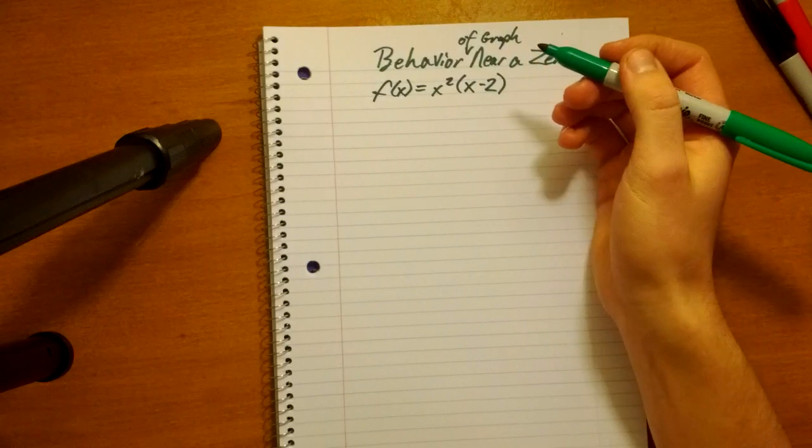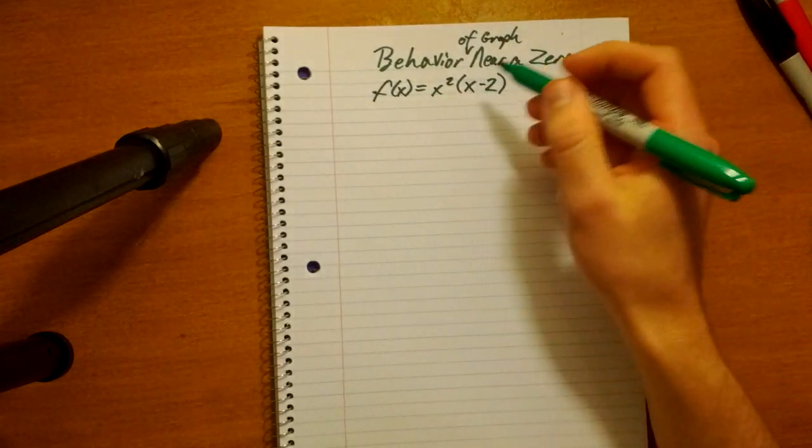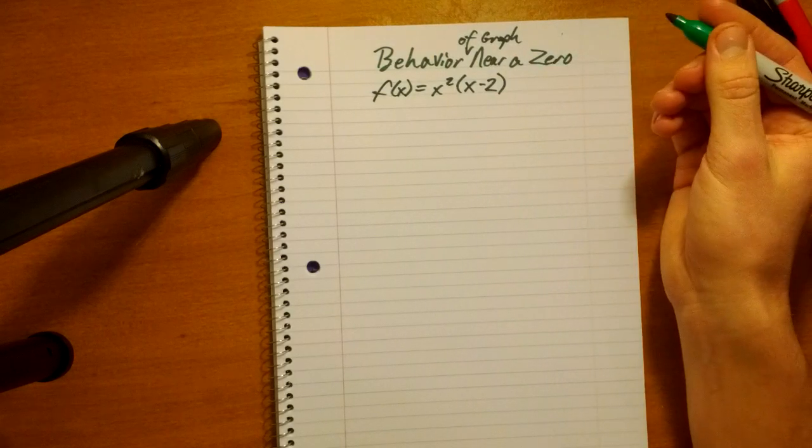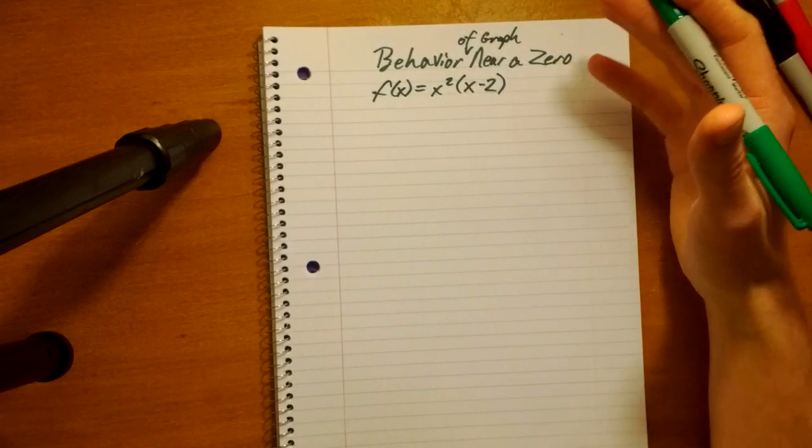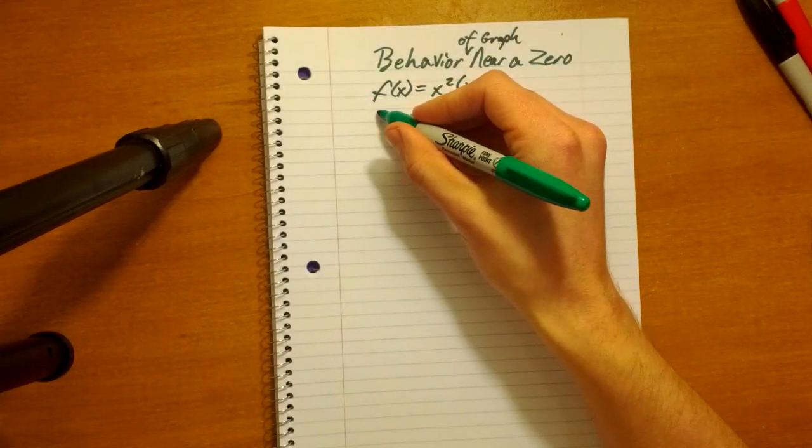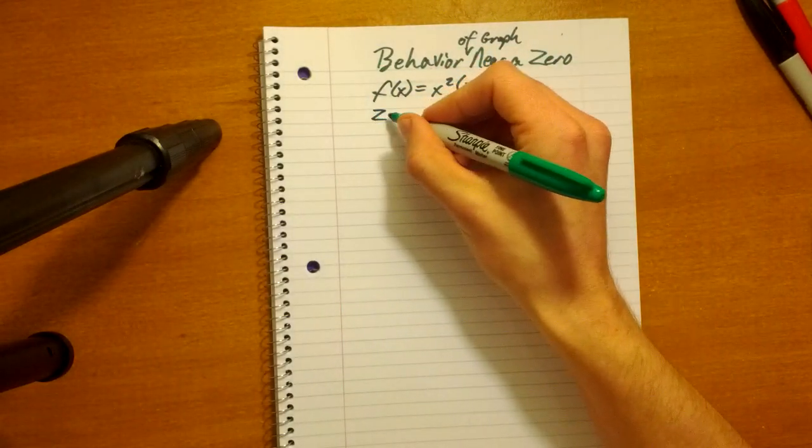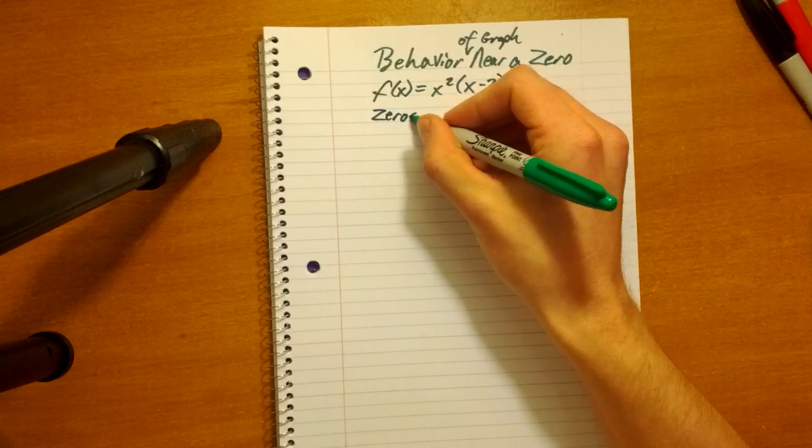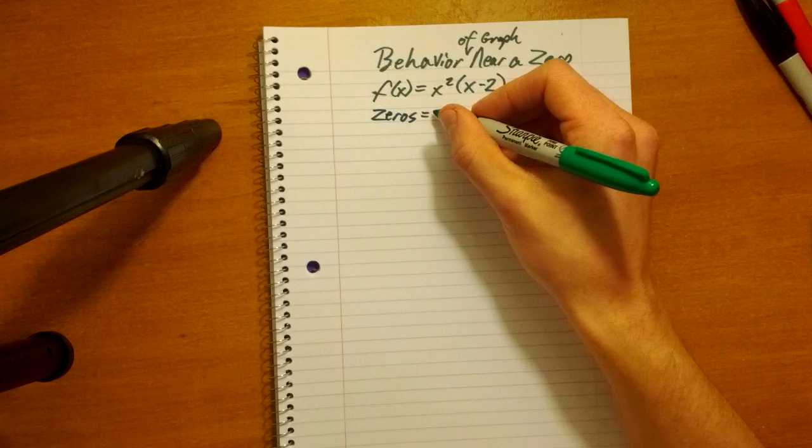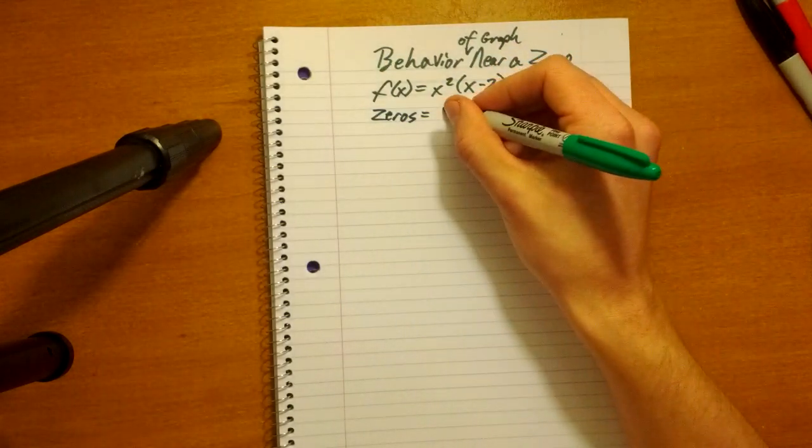So, say we have the polynomial function, function of x equals x squared times x minus 2. First thing we need to do is find the zeros.